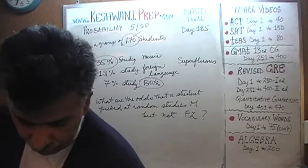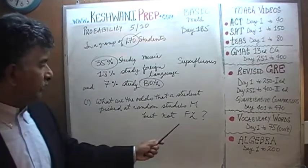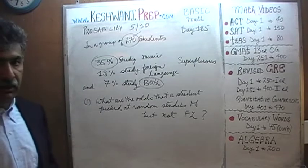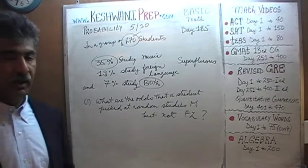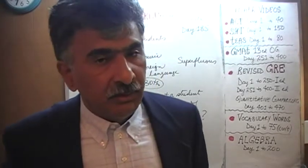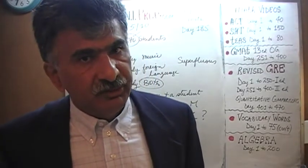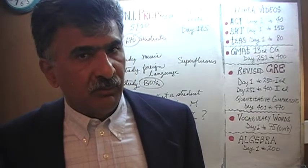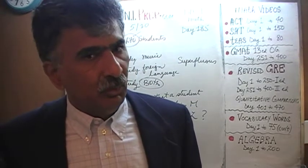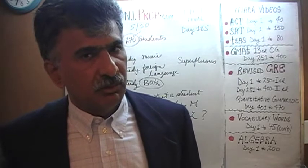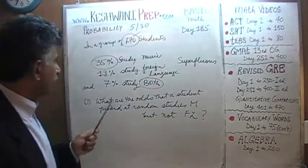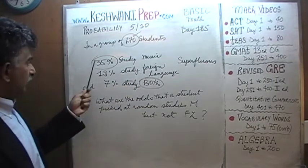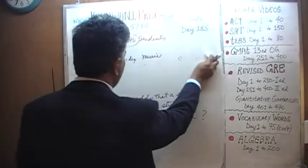In order to answer this question, we have to take the information — 35%, 18%, and 7% — and put it in a Venn diagram. If you present it in terms of a Venn diagram, it makes it much easier to analyze and keep track of everything. It is less likely that you will be confused. So we are going to put it in two groups: music and foreign language.